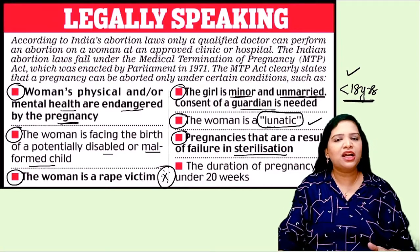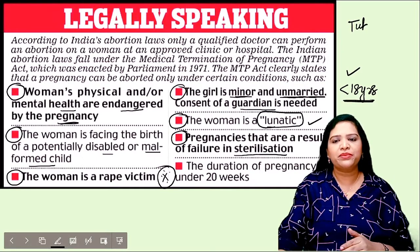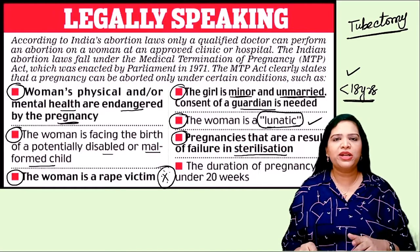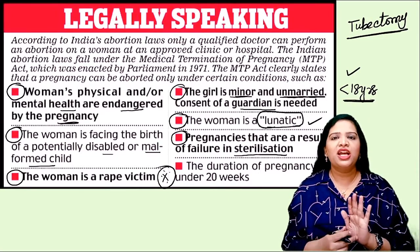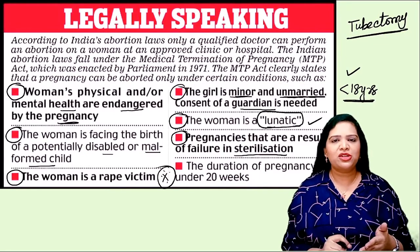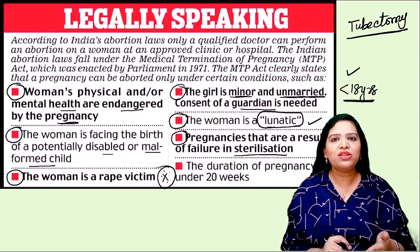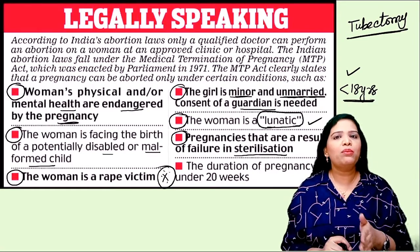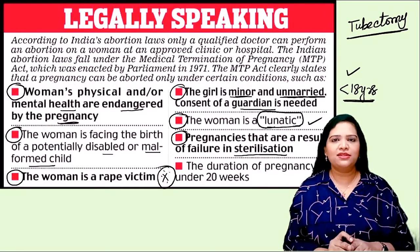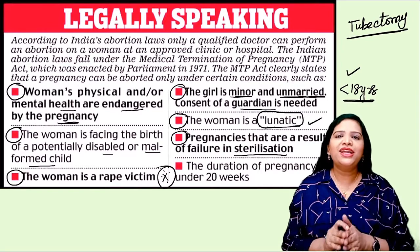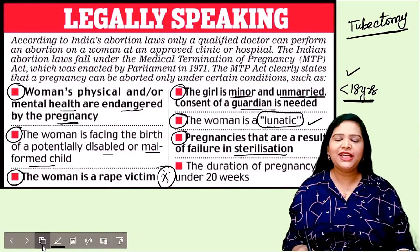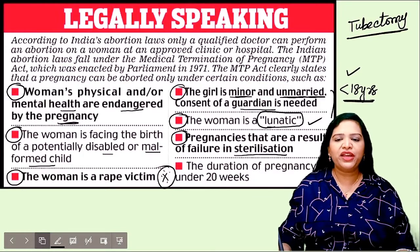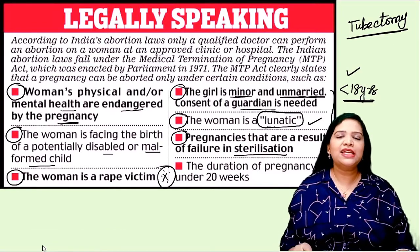One permanent birth control method is tubectomy, which is the commonest birth control method in India. After a woman has undergone tubectomy, the doctor gives a certificate that she is now permanently sterile. Suppose that sterilization was a failure — she may get pregnant. In such case there is no mistake of the woman; if she doesn't want that baby, aborting it is legally approved. Finally, compulsorily, the duration of the pregnancy must be less than 20 weeks. If any of these reasons are satisfied, then it is legal to carry out the MTP.